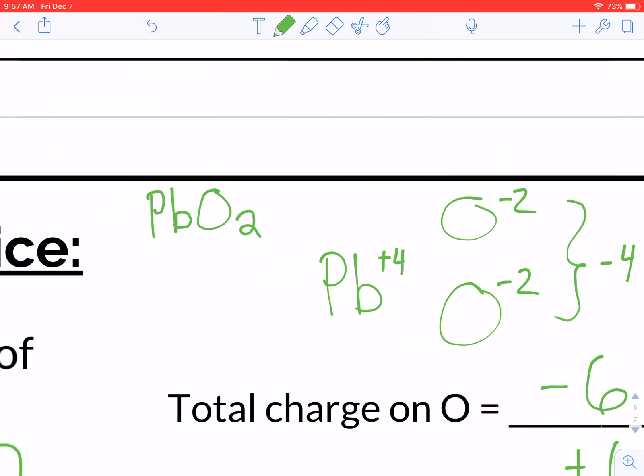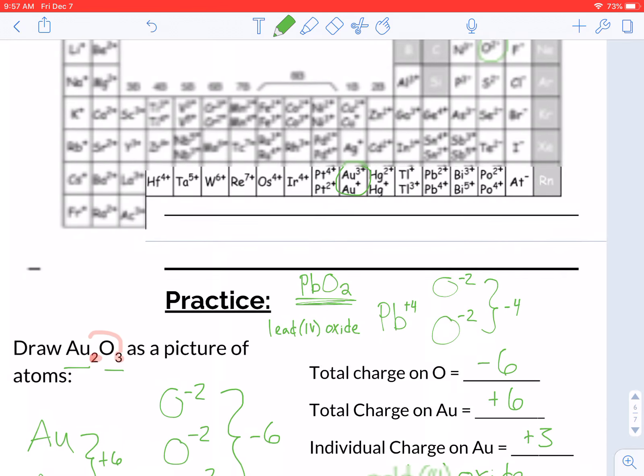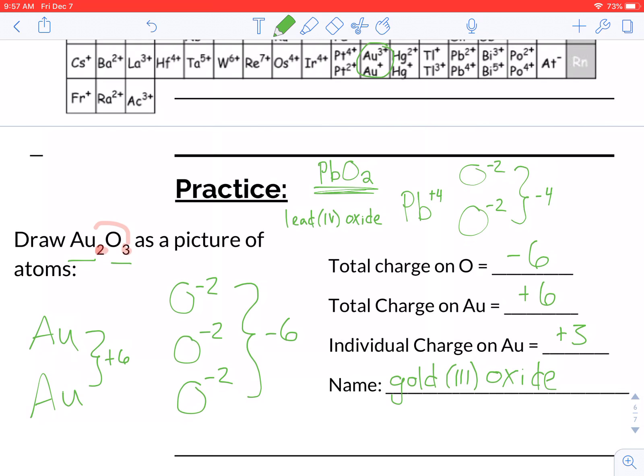So this chemical here would be lead 4 oxide. If you were just looking at the subscripts up here, you would probably think that was lead 2 oxide. So that's why it's better to just draw the pictures, or at least try to imagine this visual in your head.